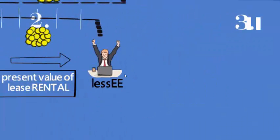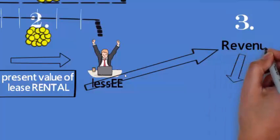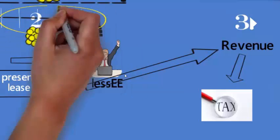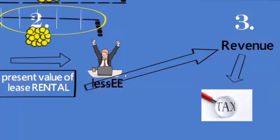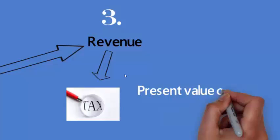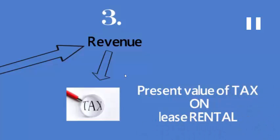The third factor: the lease rental is the source of revenue or income for the lessor. And when there is revenue, there comes tax. This tax will result in an outflow — in the first year, second year, third year — as and when he is going to receive the lease rental. So he must evaluate the present value of tax on lease rental.